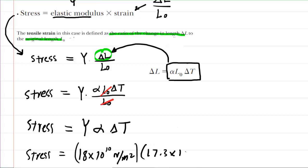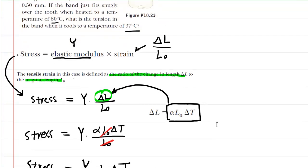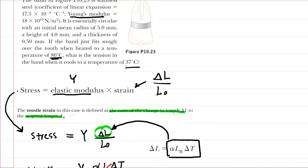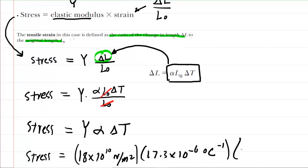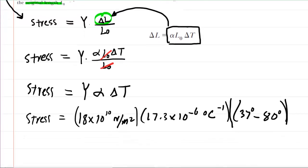And then finally, what we're going to need is the temperature change. The temperature had changed from 80 degrees down to 37 degrees. Technically, when you do a temperature change, you have to do the final value minus the initial value. If we do this, we're going to get a negative result, and that just shows us that as it cools, there's going to be a contraction within that metallic band. We don't really want a negative answer here, so we're just going to take the absolute value just so we know the magnitude of the stress developed in that metallic band.